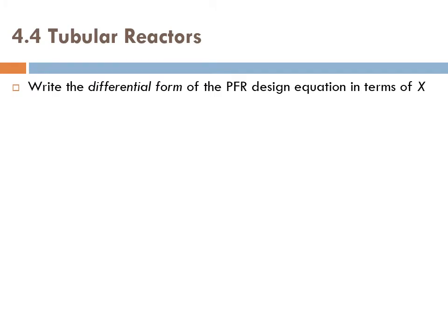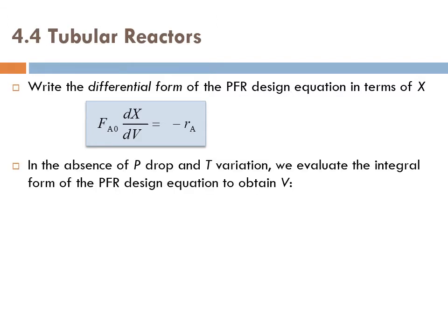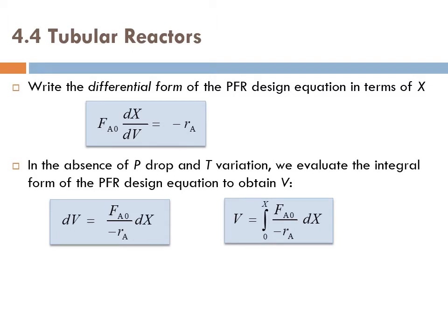For tubular reactors, let's write the differential form of the plug flow reactor design equation in terms of X. You know how to write it already. This is the design equation in the absence of pressure drop and temperature variation. We evaluate the integral form of the plug flow reactor design equation to obtain V. We do some manipulation, write the equation this way, then integrate to find the total volume of a plug flow reactor required to achieve a conversion X.